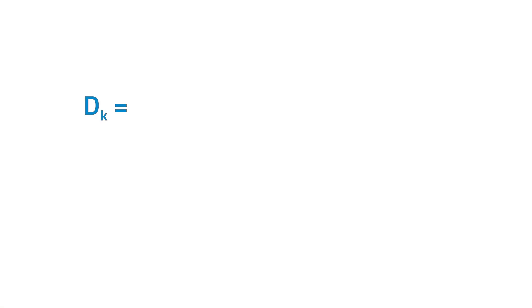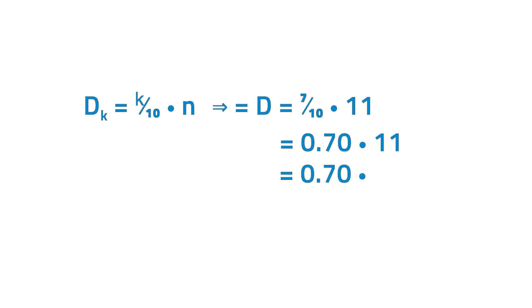Using the same problem as earlier, can you determine the seventh decile? Round up 7.7 to the next integer, which is 8. Therefore, the seventh decile is the eighth value. Thus, D7 = 59,000 pesos. There are 70% of the data set below 59,000 pesos and 30% are above it.